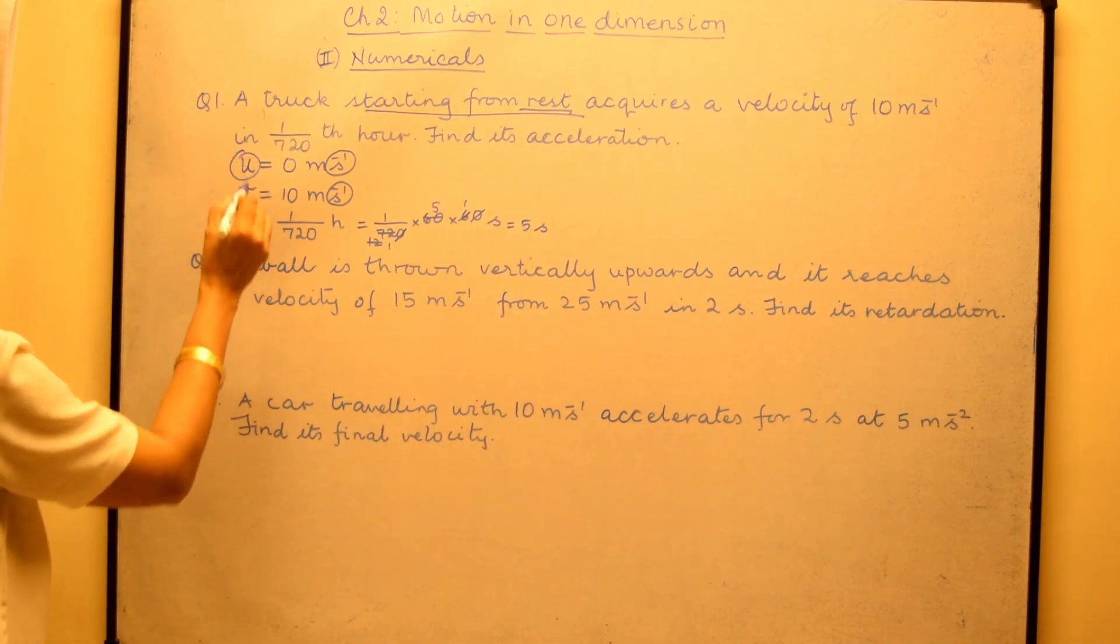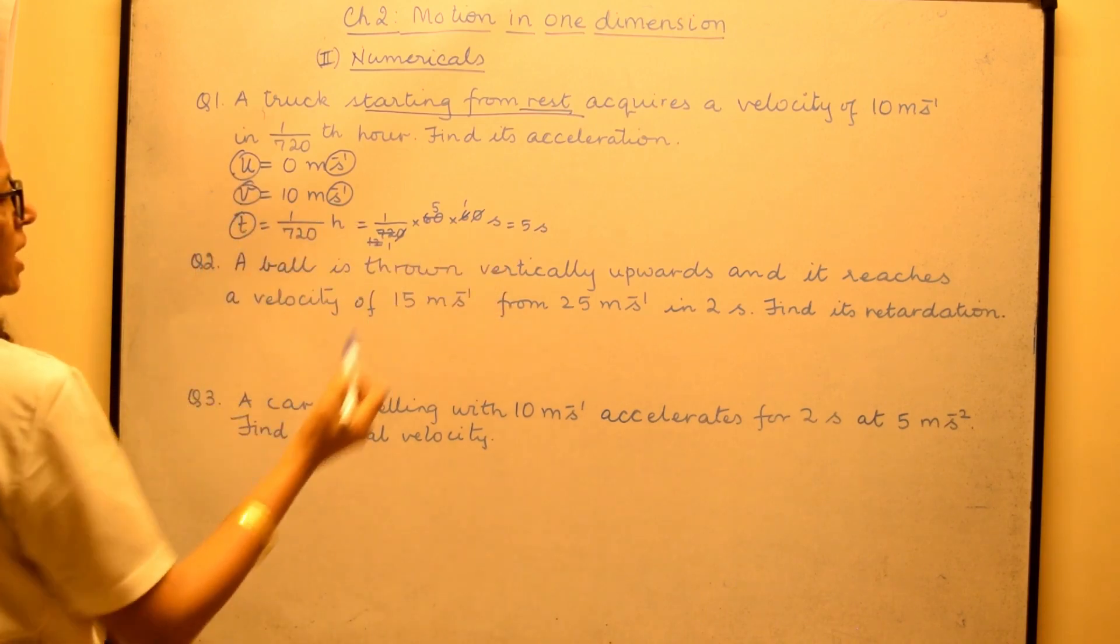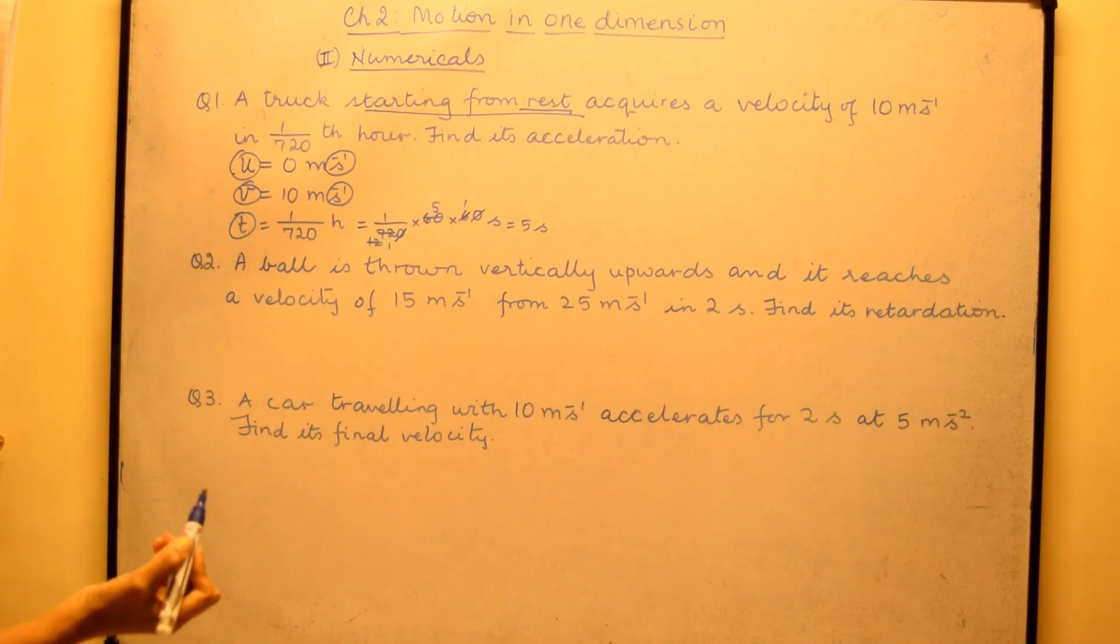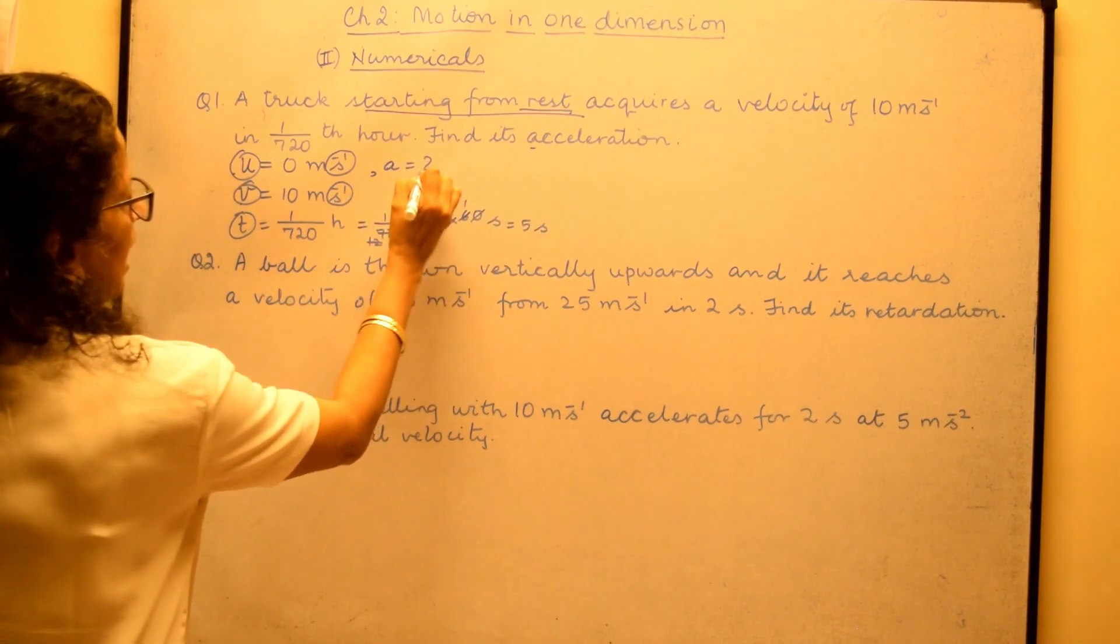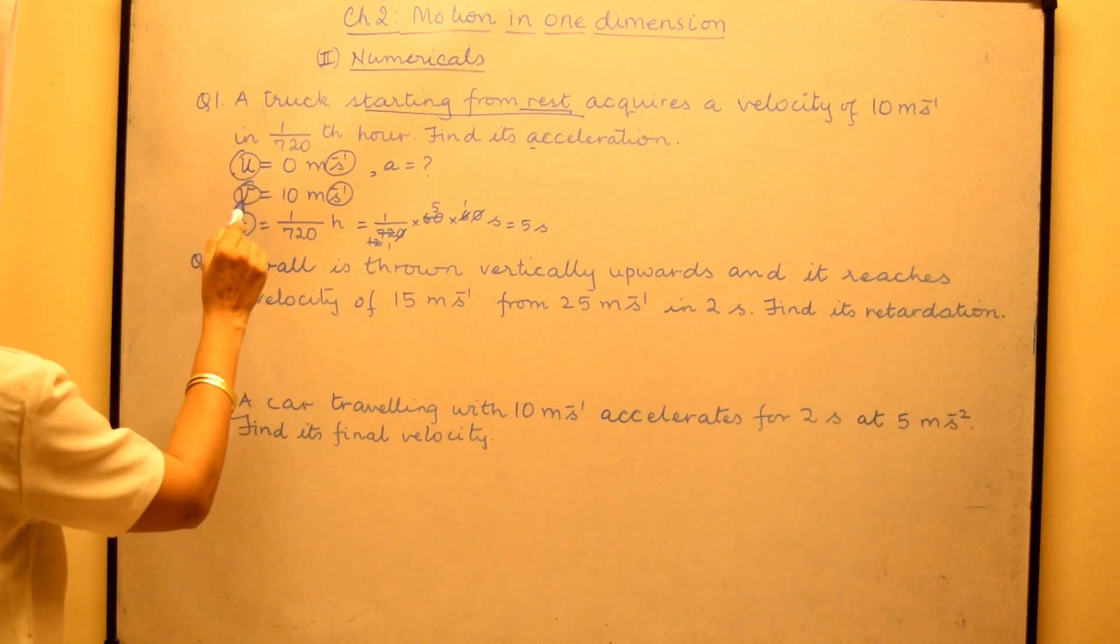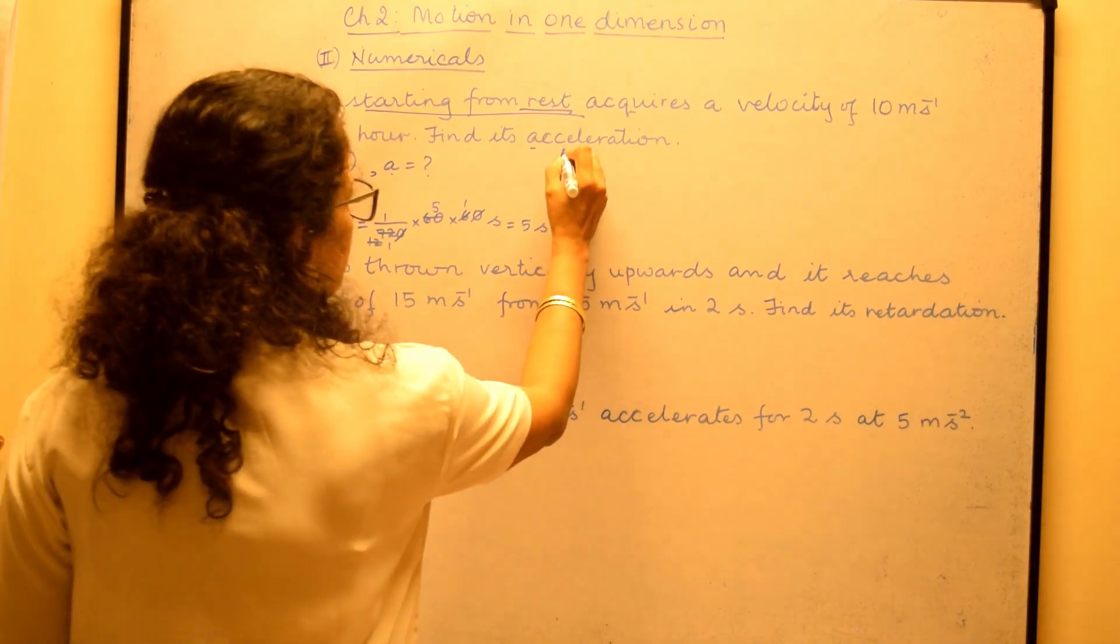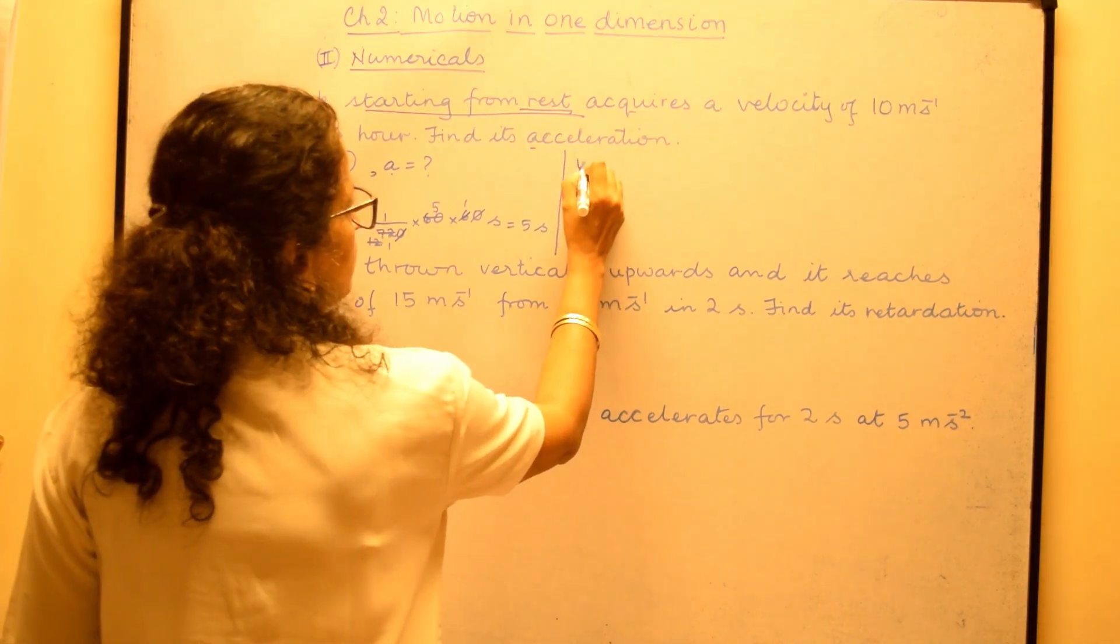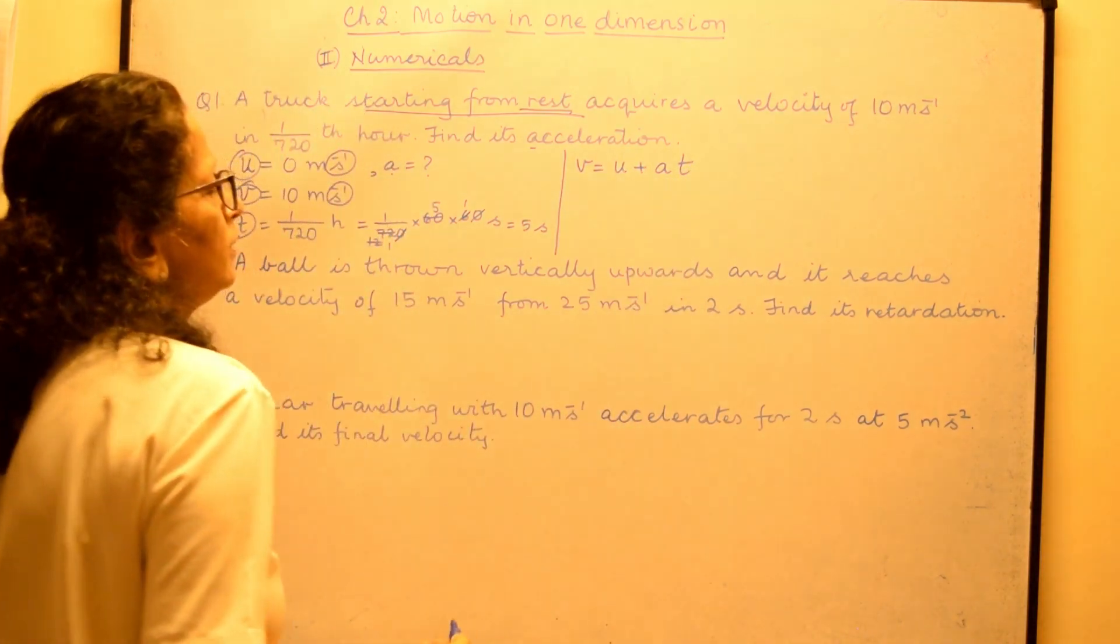Now that we have v and u, v here, u here and time is 5 seconds, we can use two formulas. Either acceleration because you have to find acceleration. Our question is find the acceleration. So connect it with the formula with v, u, a and t. So you can either write a is equal to v minus u upon t because acceleration is rate of change of velocity or you can take v is equal to u plus at. You remember the three equations of motion. The first one being v equal to u plus at. So let us use this in this case.